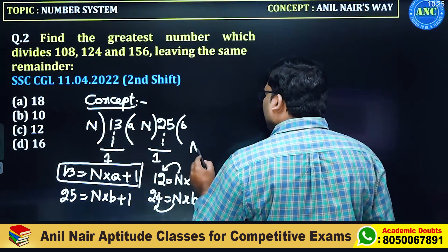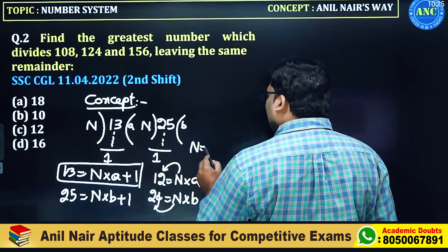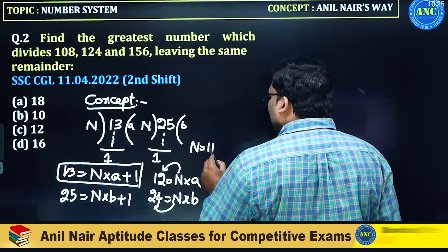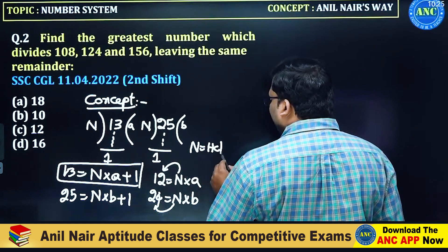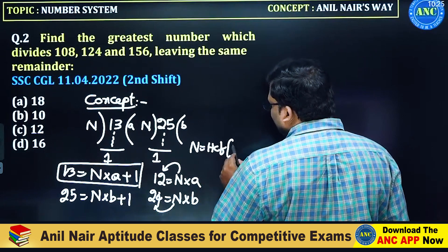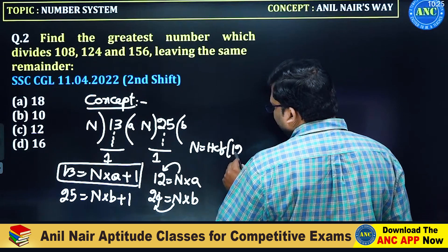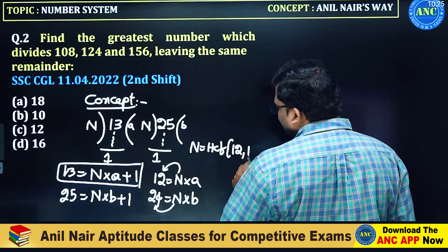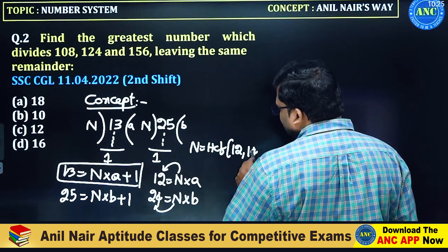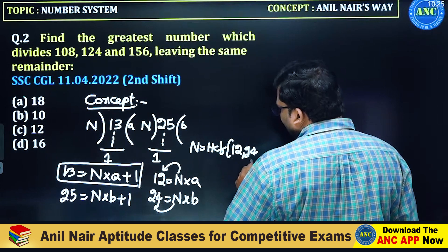Greatest number — so the greatest factor is given by the HCF of 12 and 24. The greatest factor is given by 12 and 24.